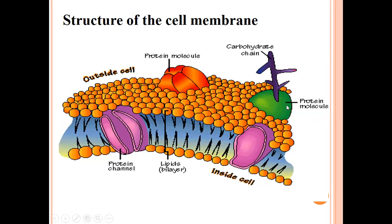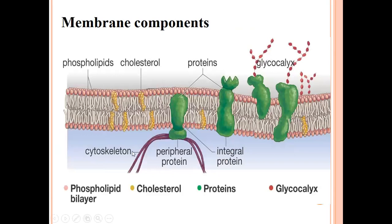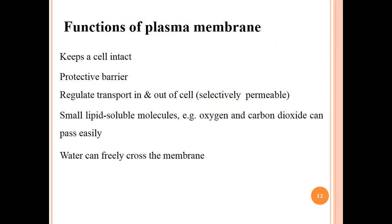The carbohydrate chains are represented here. This is the protein molecule; this is the inside of the cell. The lipid bilayer is present here, and a protein channel helps to move ions, molecules, or compounds outside or inside of the cell. Here we have another diagram of membrane components showing phospholipids, cholesterol, integral proteins, peripheral proteins, cytoskeleton, and glycocalyx — the red-colored bean-type structures represent the glycocalyx.